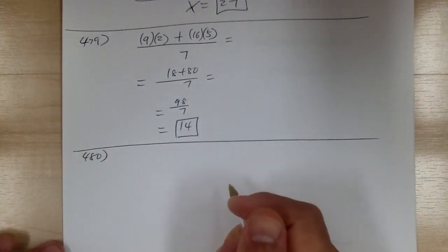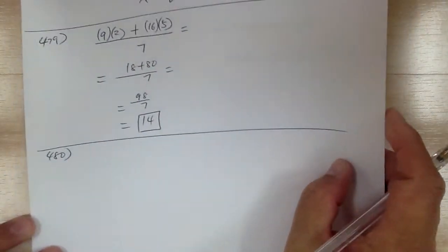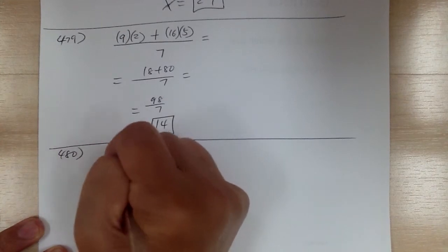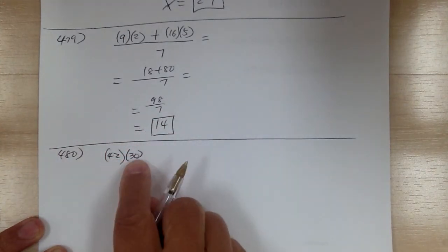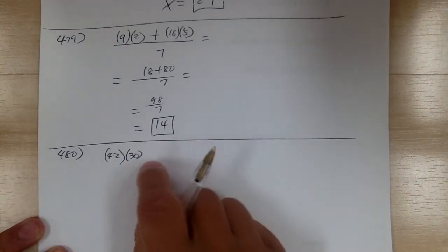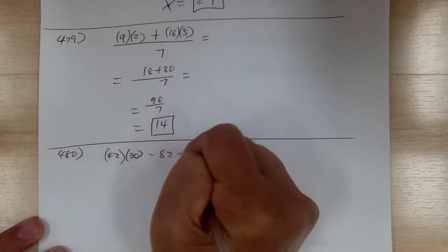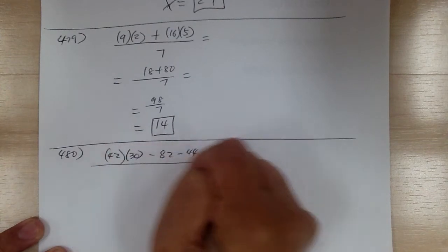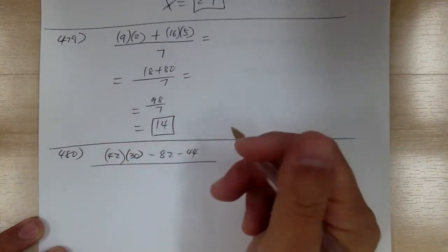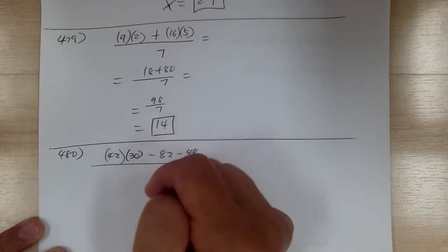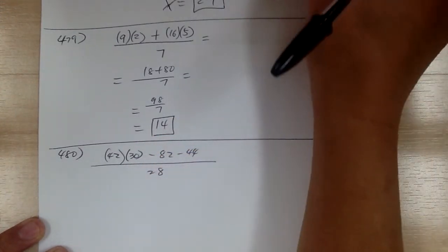Let's go to 480. 42 is the arithmetic mean of 30 numbers. So 42 is the average and there are 30 numbers, so average times how many gives you the total. Now, if 82 and 44 are removed — so minus 82 minus 44, these two numbers are removed — then what is the mean of the remaining numbers? If you remove two numbers, you're going to have 28 numbers left, so you divide by 28 to find the average.